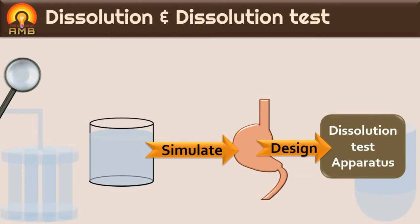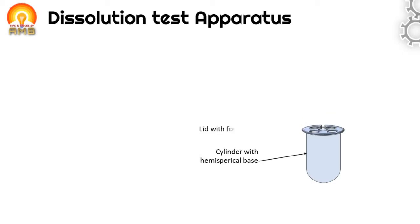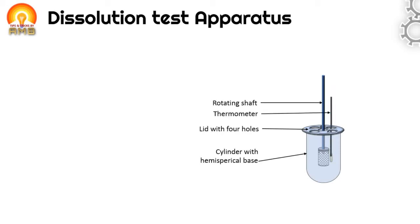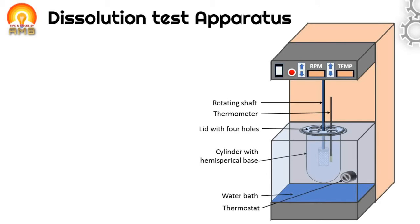Let's see the construction of dissolution test apparatus. Dissolution test apparatus consists of the following parts: it has a cylindrical vessel with hemispherical bottom made up of glass or other transparent material having 1000 ml capacity. The vessel is fitted with a lid having four holes — one for introducing the shaft of the stirrer, second for placing the thermometer, and remaining two for removing the samples. The vessel is clamped in a water bath to maintain the temperature of the liquid medium in the vessel at 37 degrees Celsius plus or minus 2 degrees Celsius.